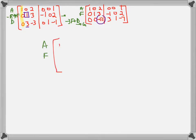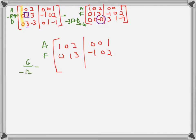Moving to column 3, always get a 1 first. The 1 needed is in row G, so I don't change rows A and F — I just divide row G by negative 12 and call it row H: 0, 0, 1 | negative 1/4, negative 1/12, 7/12. A calculator that handles fractions is very helpful at this point.